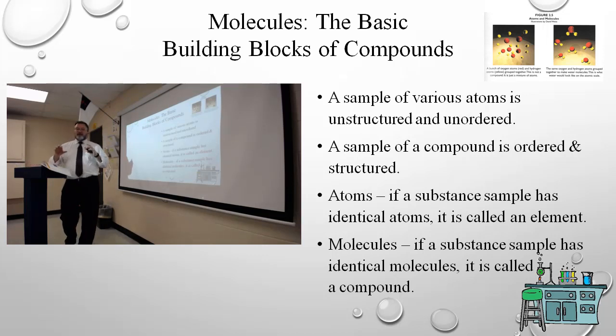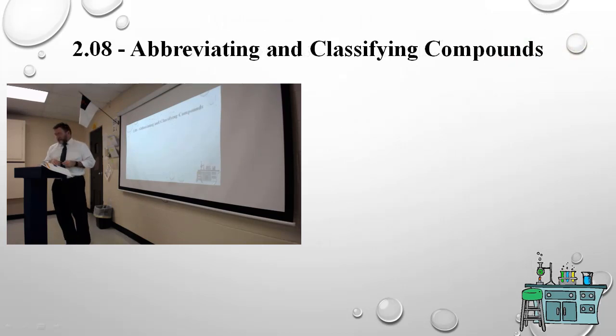When you have a sample that is all the same kind of atom, you have atoms of an element. When I have a sample where it's all the same exact structure, I have molecules of a compound. The structure's names are atom and molecule. They represent elements and compounds.